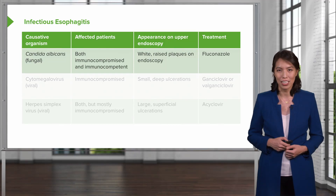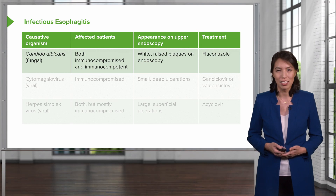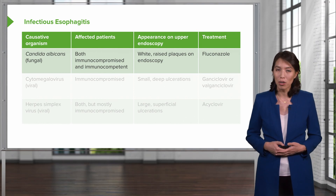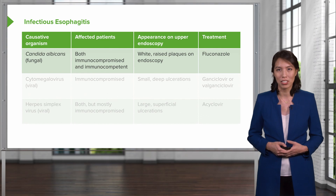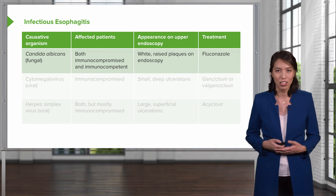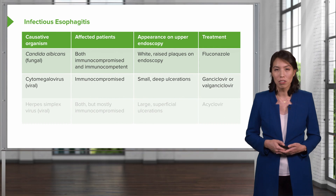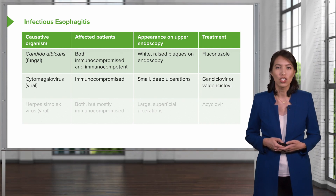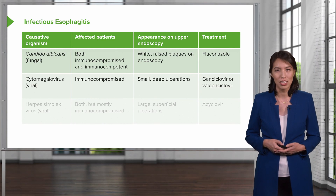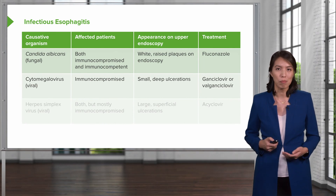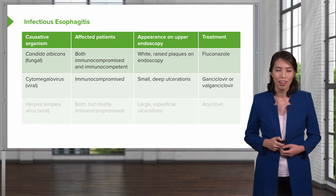Infectious esophagitis can be caused by many organisms. One of the most common causes is Candida albicans. It can affect both immunocompromised and immunocompetent patients. They tend to have white raised plaques on endoscopy, and treatment is with an antifungal agent like fluconazole. Patients may also have infection with cytomegalovirus, or CMV, which usually affects immunocompromised patients. They may have small deep ulcerations on endoscopy, and should be treated with ganciclovir or valganciclovir.